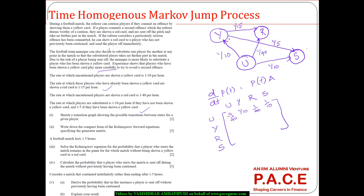From the yellow state, the transition to red is 1/15 and to substitution is 1/5 = 3/15, giving a total outflow of 4/15, so the diagonal entry is −4/15, and the entry from yellow back to uncautioned is 0. From the red state there are no transitions, so that entire row is 0. Similarly, from the substituted state there are no transitions. This gives the complete generator matrix and the Kolmogorov forward equation in its simplest form.